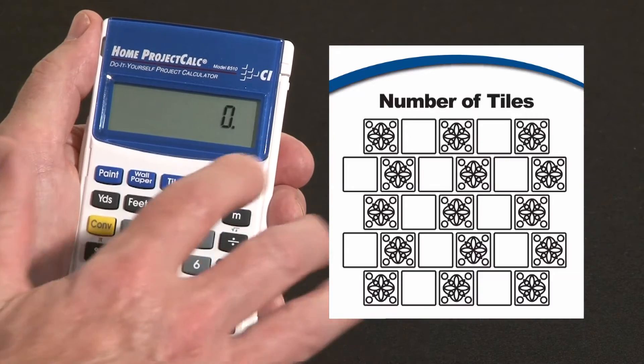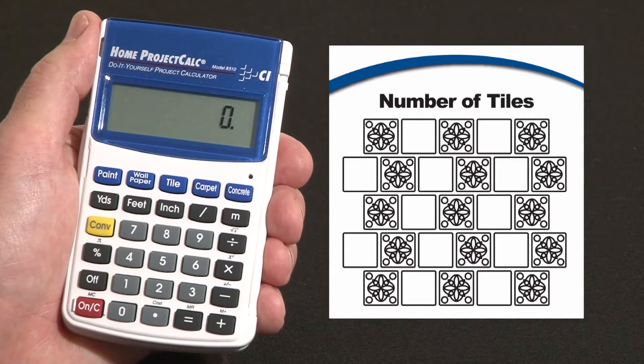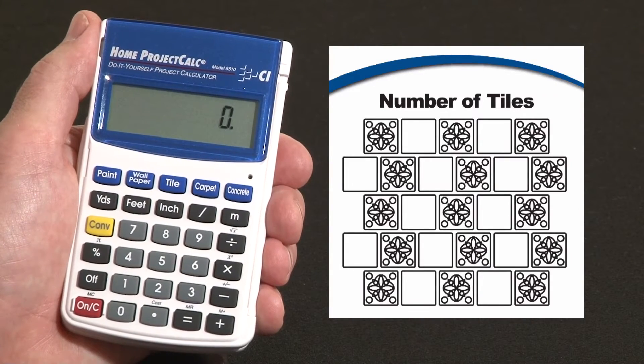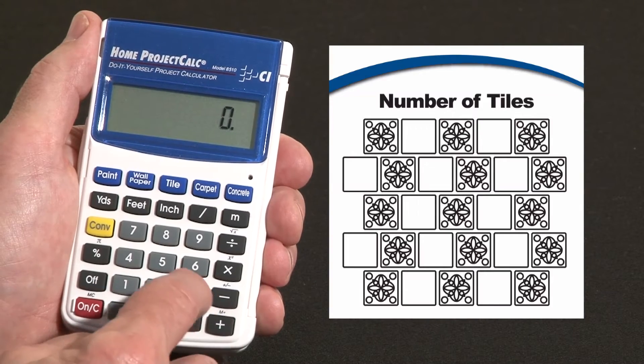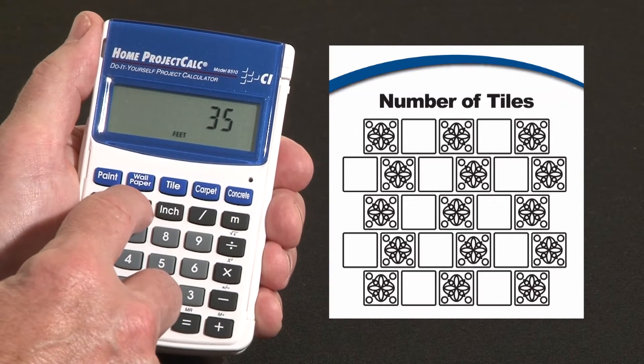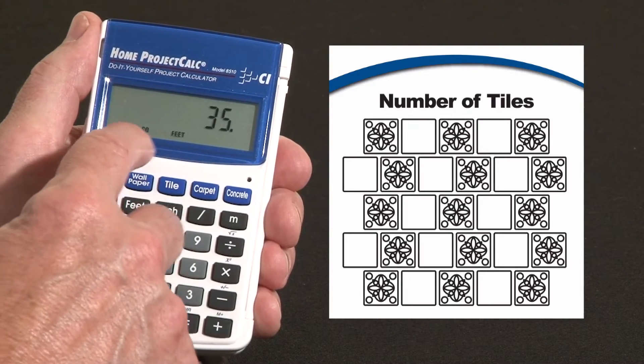If however we need it for an area like a countertop or a floor or a backsplash, say the area is 35 square feet. 35, hit feet once for lineal feet, hit it again, it says square feet.